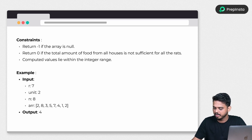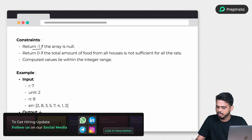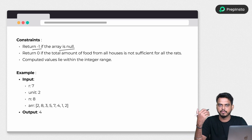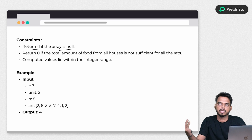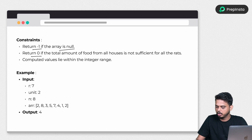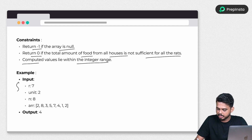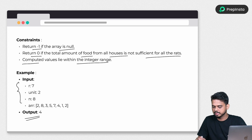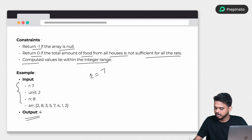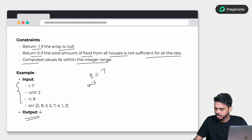There are two edge case constraints: return minus one if the array is null or has no food content in any house, and return zero if the total food from all houses is not sufficient for all the rats. Let's look at the sample example — we have 7 rats, each rat needs 2 units of food.